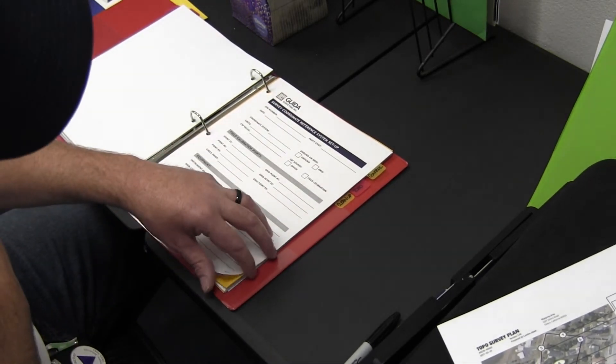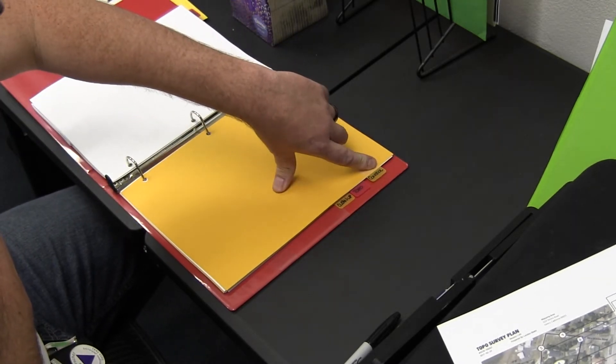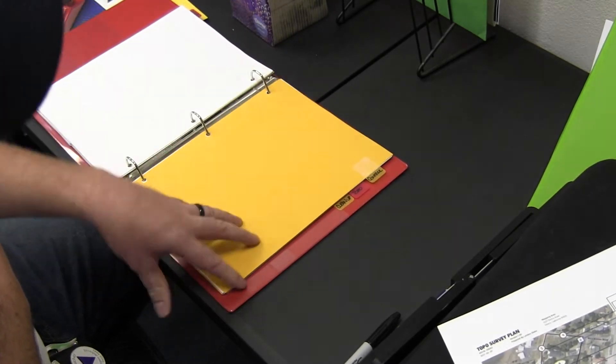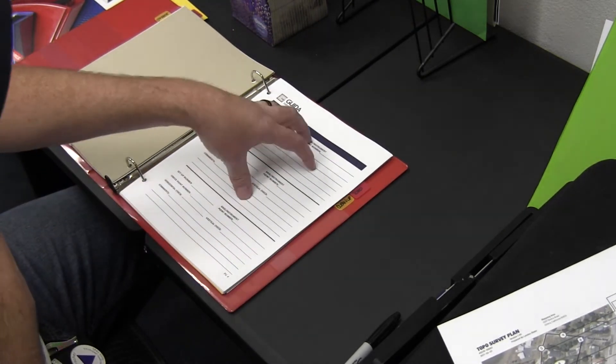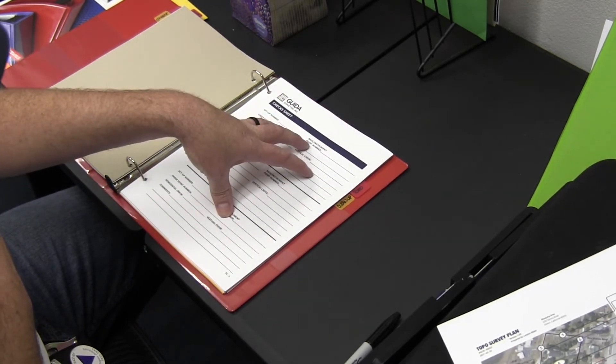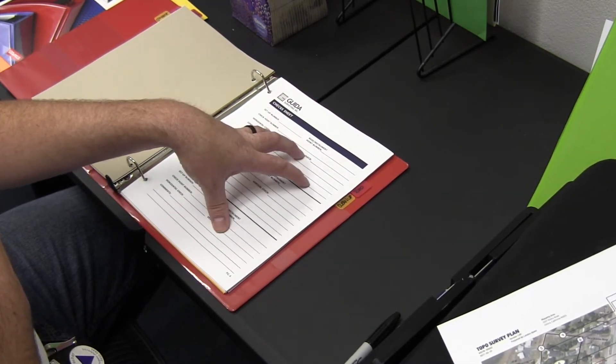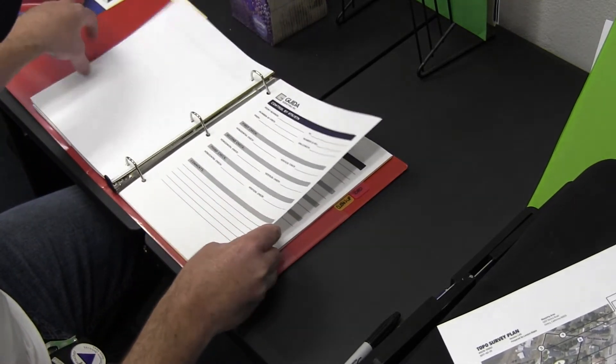The next section is control. Again, this is a section we have on almost every job. The first thing you have there is some check sheets. This is for when you have existing control on the job. You go out to the job, and the very first thing you're supposed to do is get set up and check your control. Those checks go here.